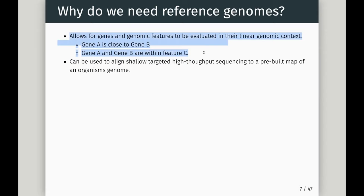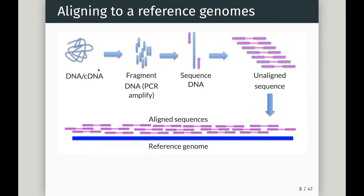Knowing the relationships between genomic elements also allows us to do shallow, targeted, high-throughput sequencing — go to Connie, sequence 25–30 million reads — and align that to this pre-built map of the organism's genome. As Connie described, we can go from our DNA or cDNA, fragment it, amplify it, sequence it, and then use tools to place our unaligned sequences onto the reference genome where they match.